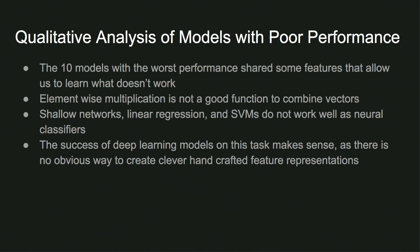We also looked at the models that performed the worst and figured out some things that didn't work. Element-wise multiplication is not a good function to combine vectors. For this task, shallow networks, linear regressions, or SVMs did not work as well as deep neural classifiers. This is understandable because for this task, it's really hard to handcraft the feature representations.